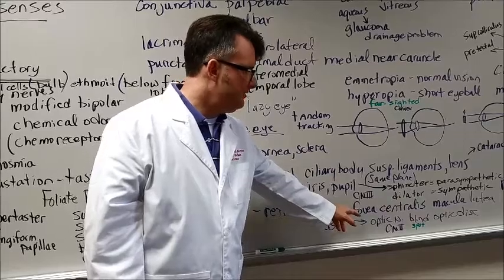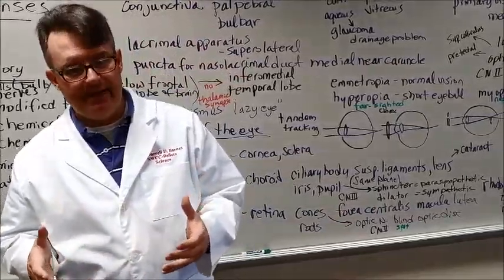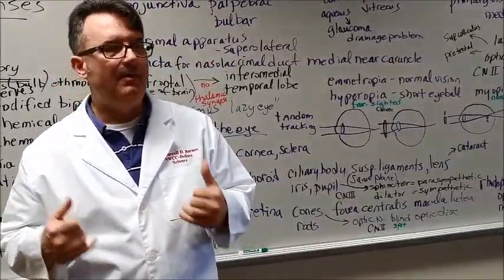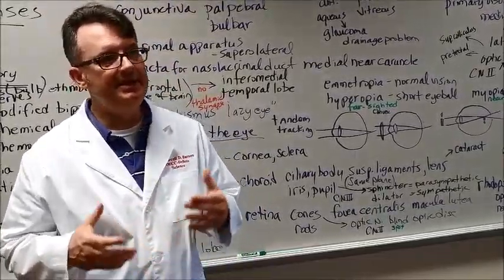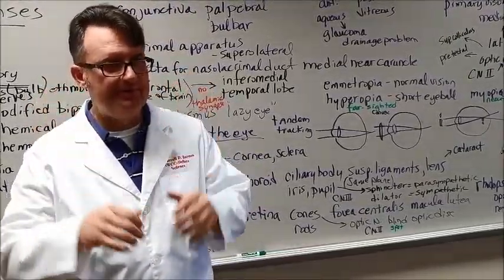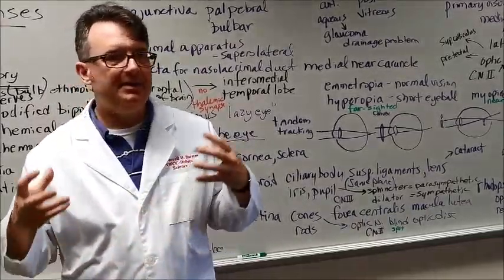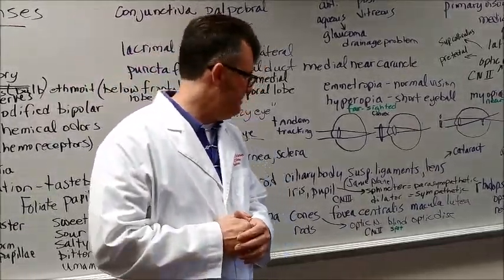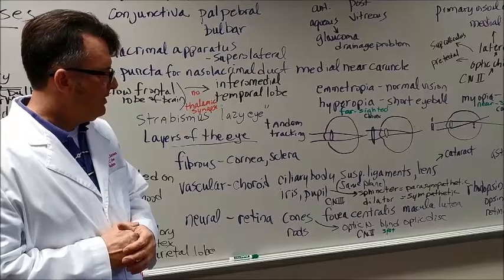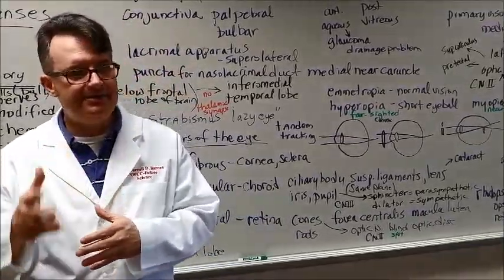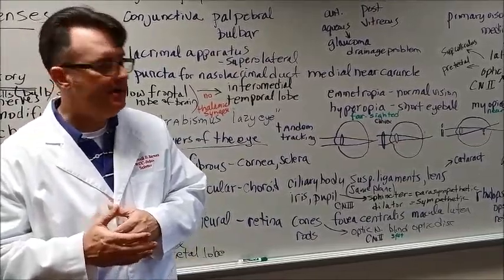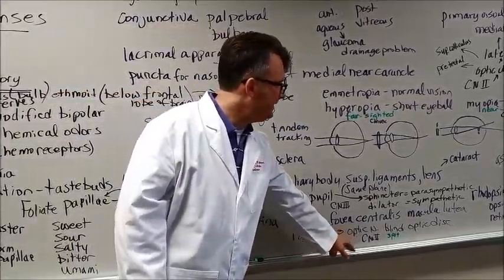The inner layer of the eye is called the neural layer, and here we're talking about the retina. When light comes in and goes through the lens and focuses on the back of the eye, it's trying to focus on the fovea centralis of the macula lutea. Why is that important? Because that's where most of the cones are located. That's where you get the acute vision. The rods are more peripheral, black and white movement. This is what the rods pick up.